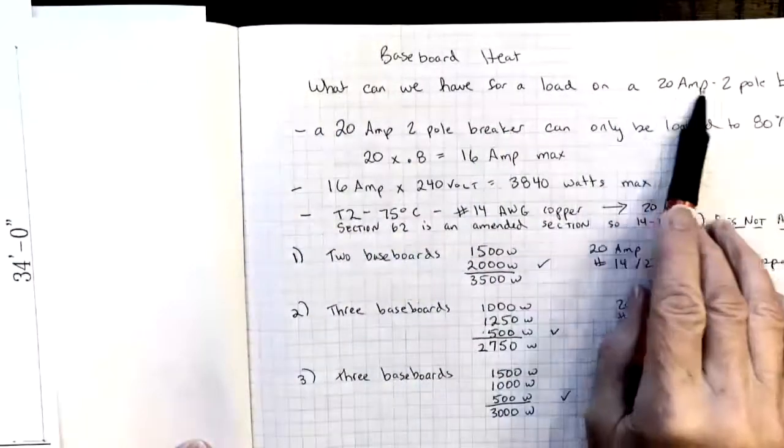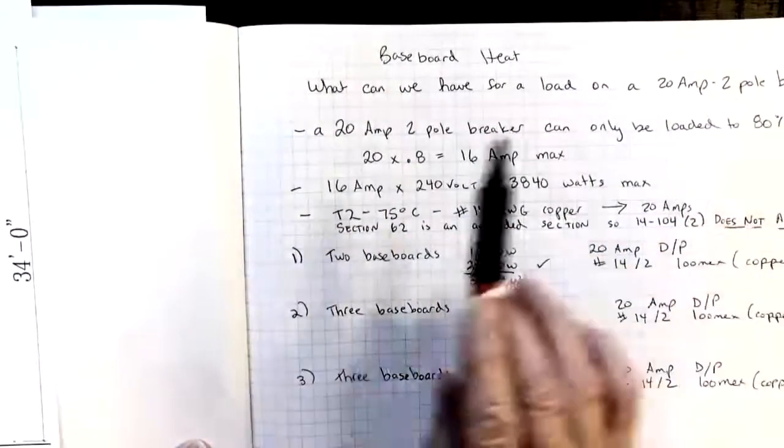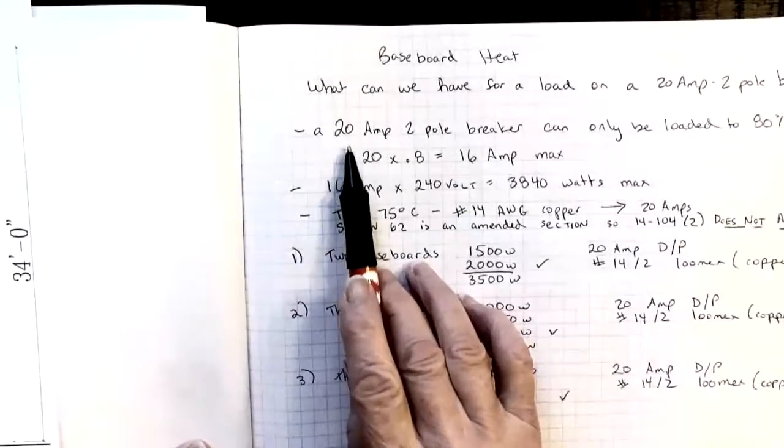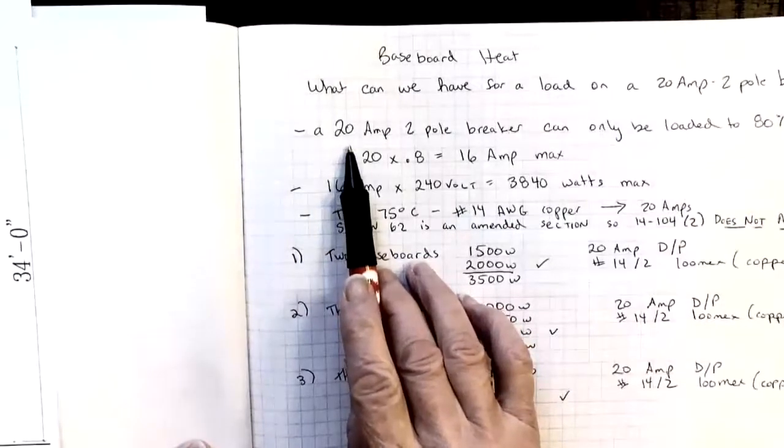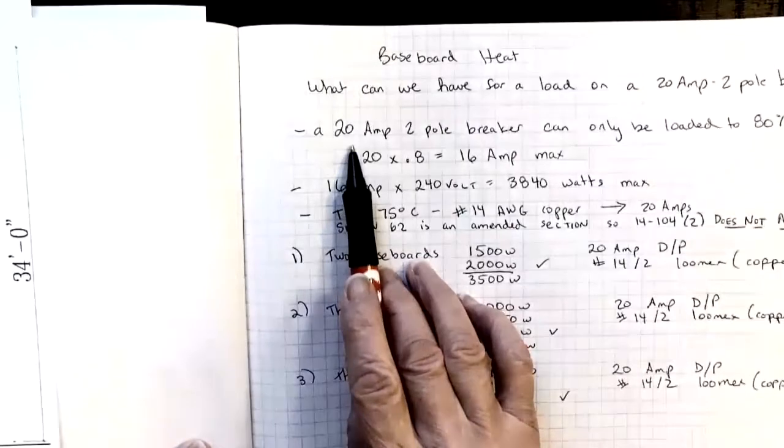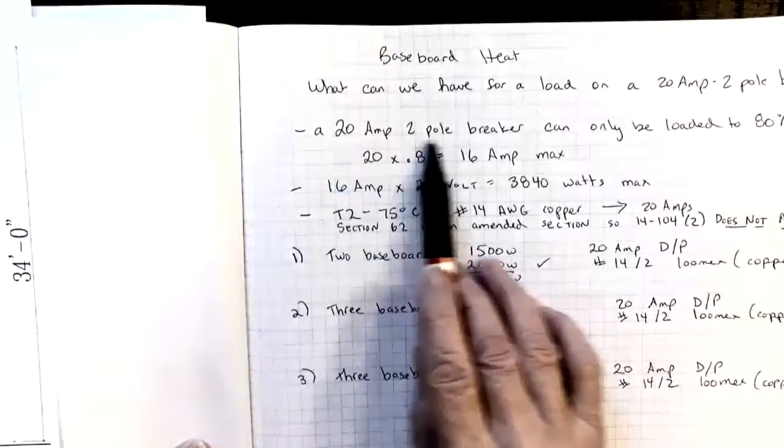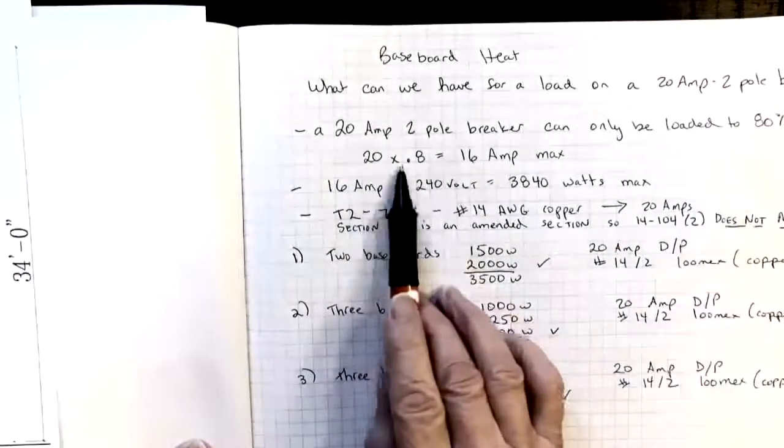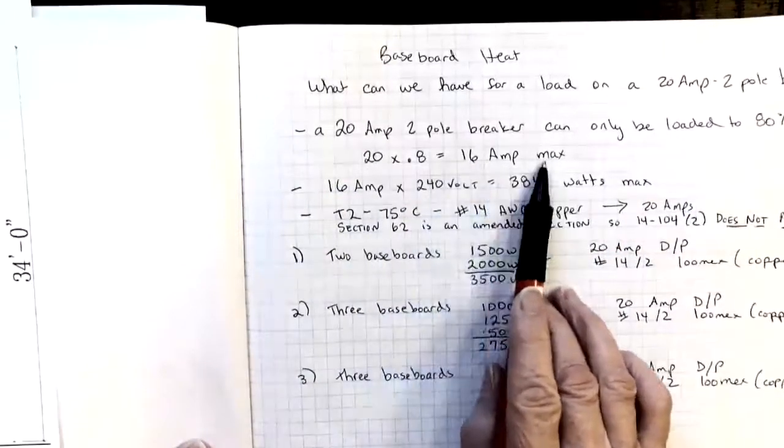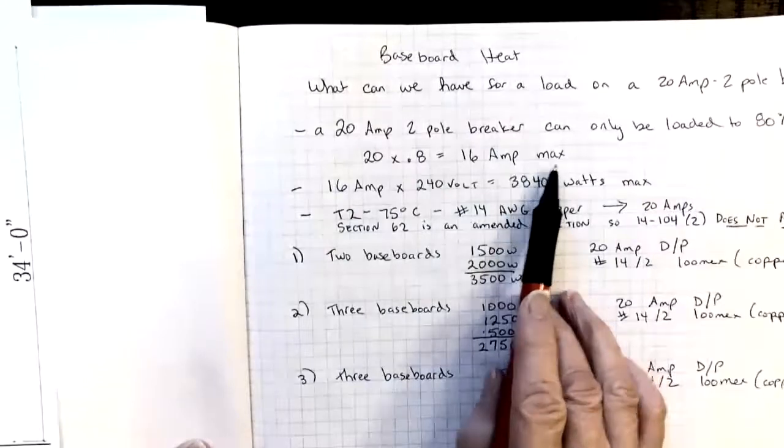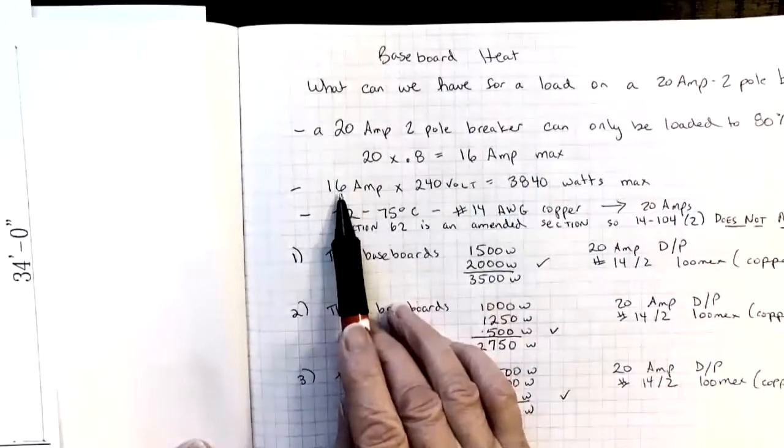So a 20 amp two-pole breaker, when we look at how much we can load it up to, previously we saw a rule in section 62 that said we could only load this 20 amp breaker up to 80%. 20 times 0.8 gives us 16 amps max on that breaker.